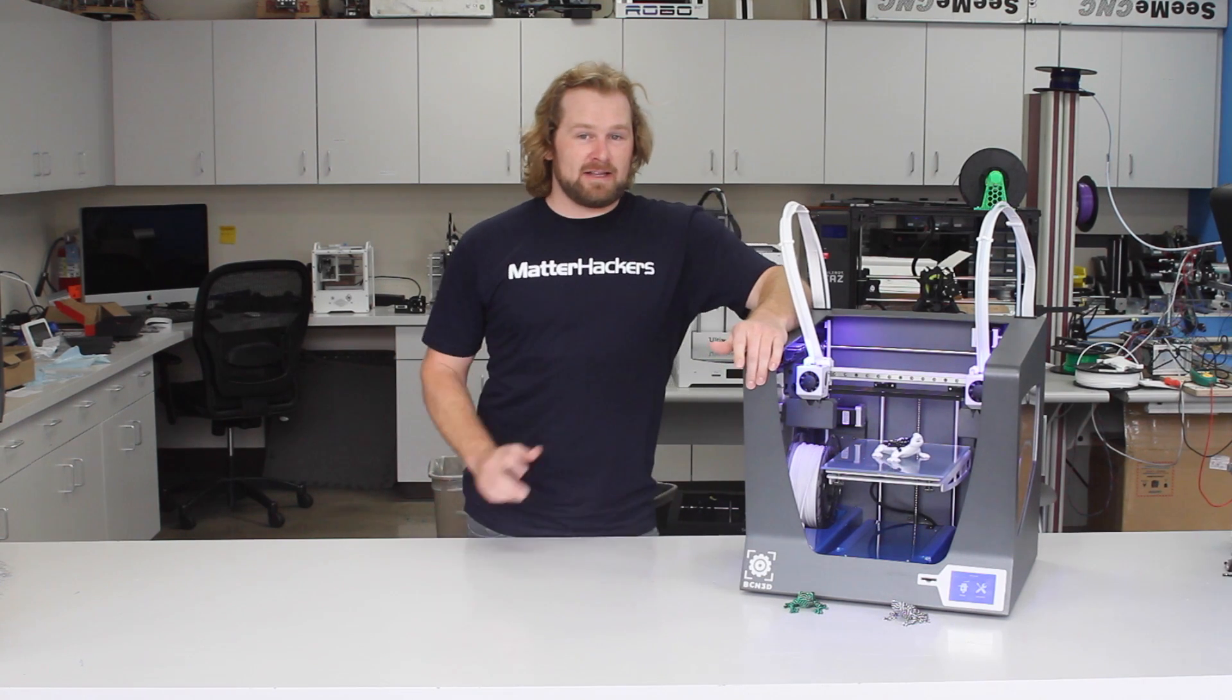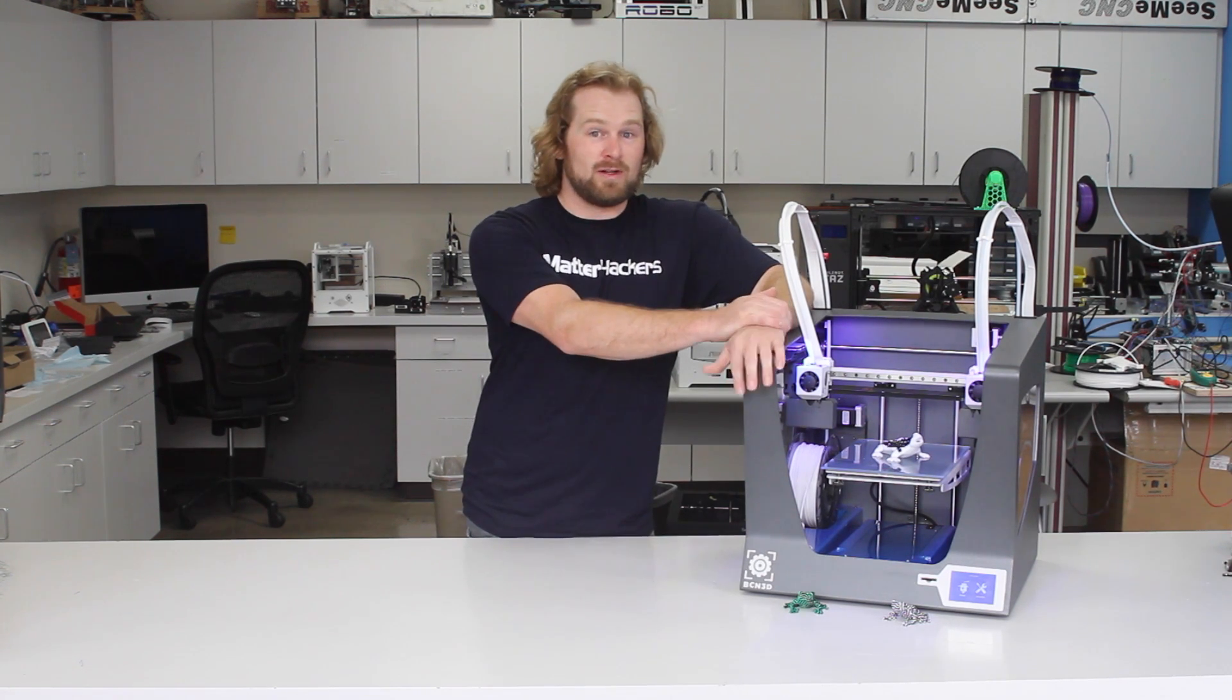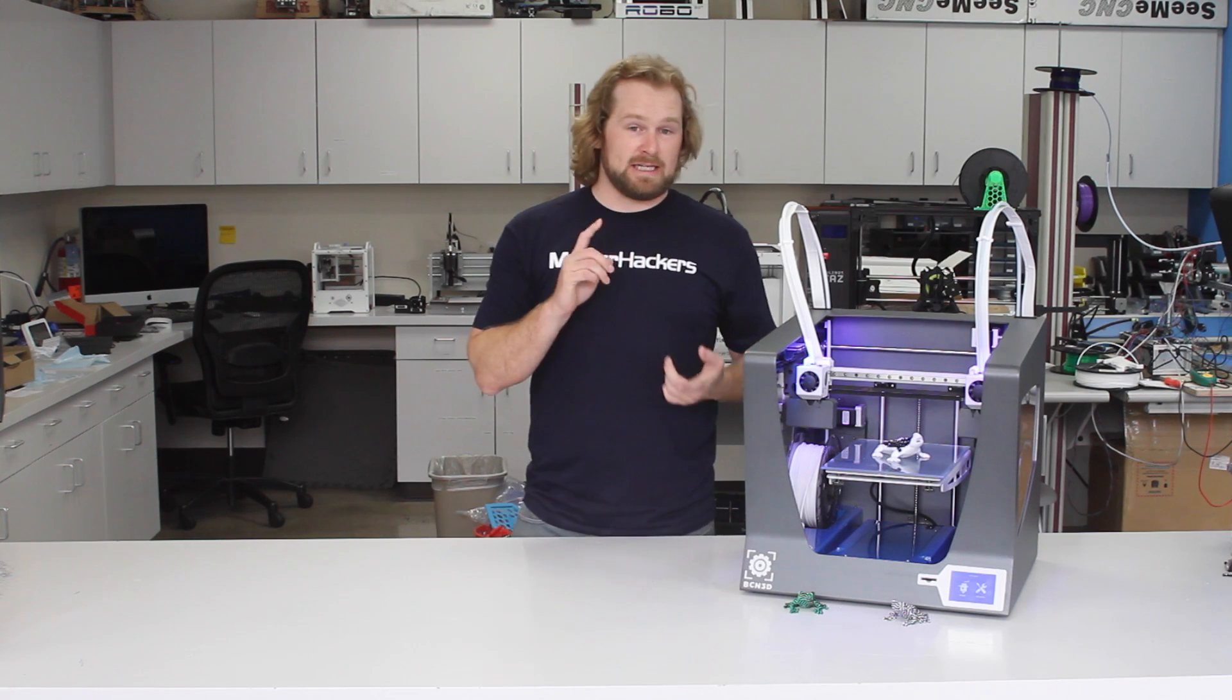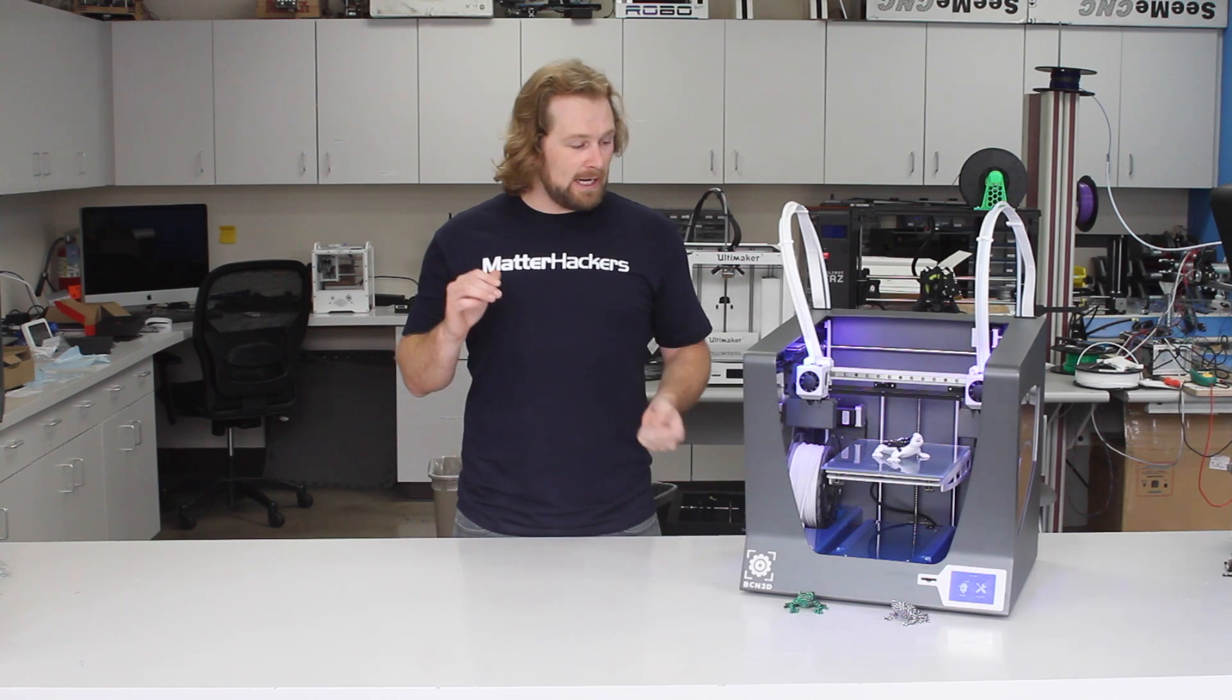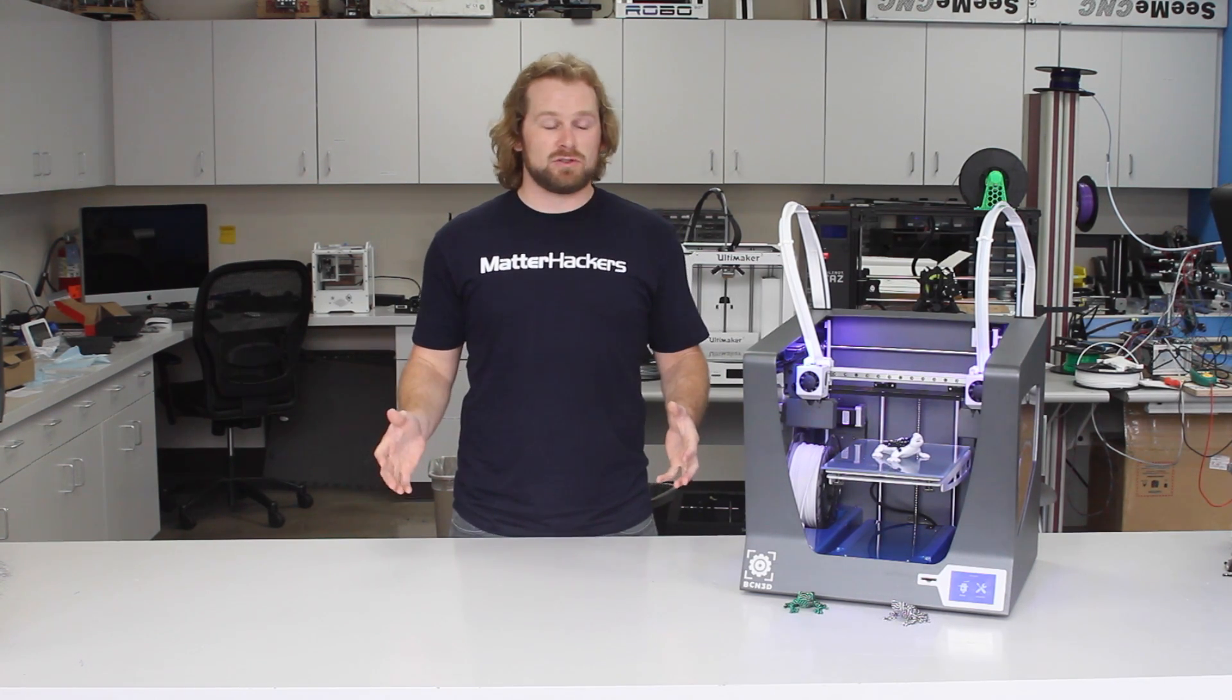This is the BCN 3D Sigma. It's a dual extrusion 3D printer that we really like. We like it for its independent dual extruders, the build volume's about 8 inches by 11 inches by 8 inches in the Z direction, and it's all metal hot end, which really expands the breadth of materials you can use with this machine.